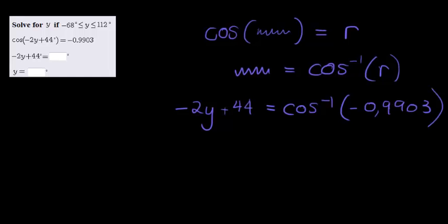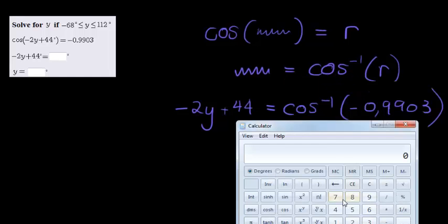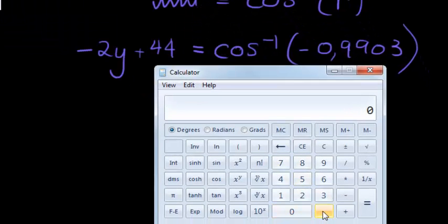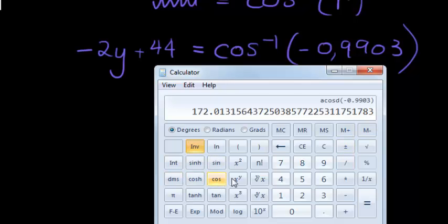And what do we get? We get 0.9903, a negative number. If we take this second function of cos, the arc cos of that, we get 172.013.